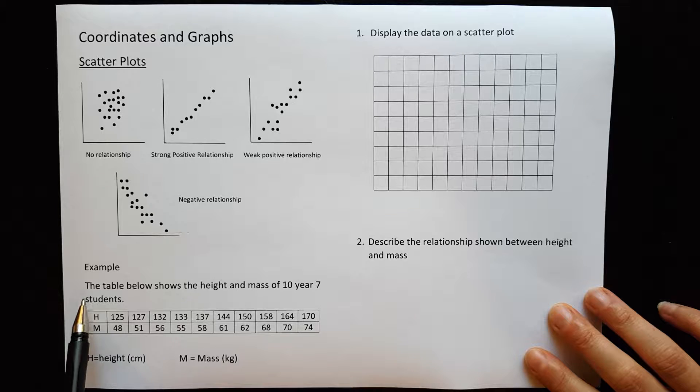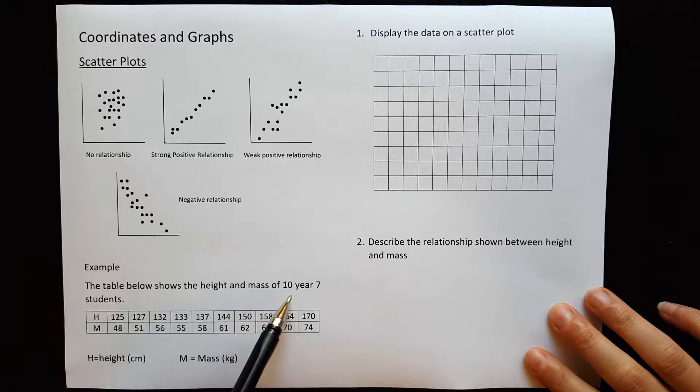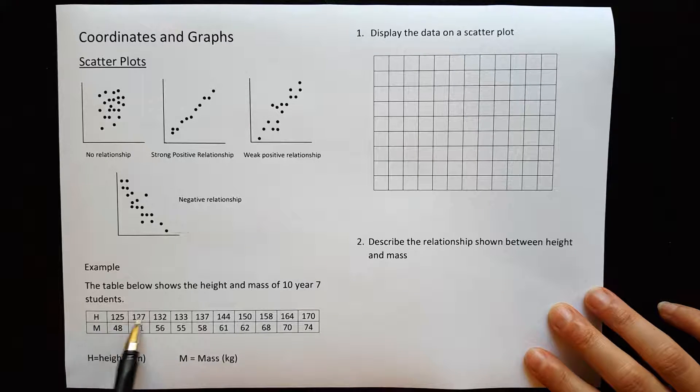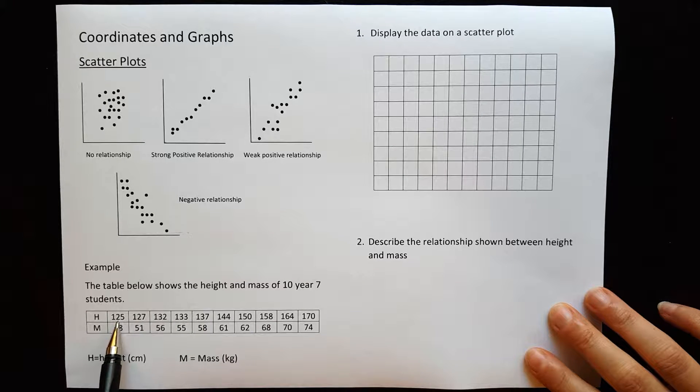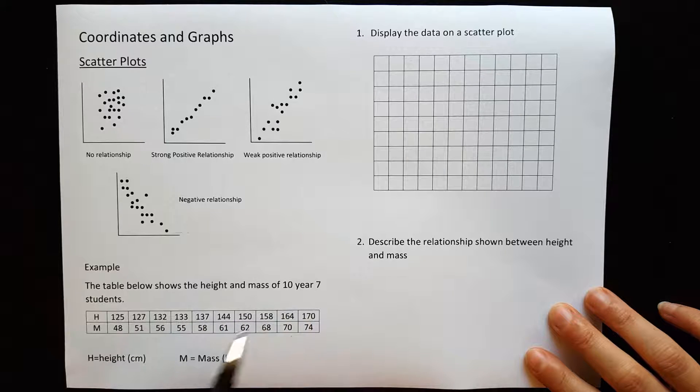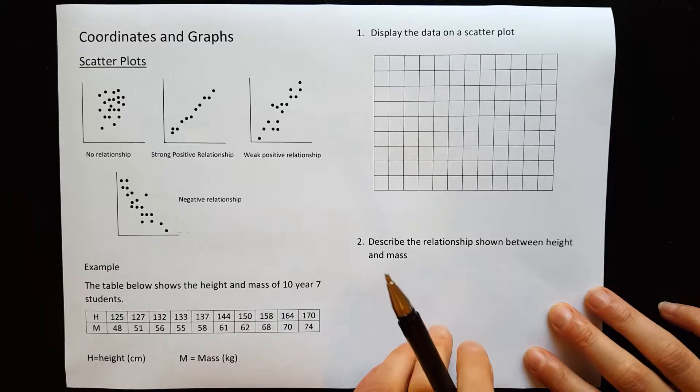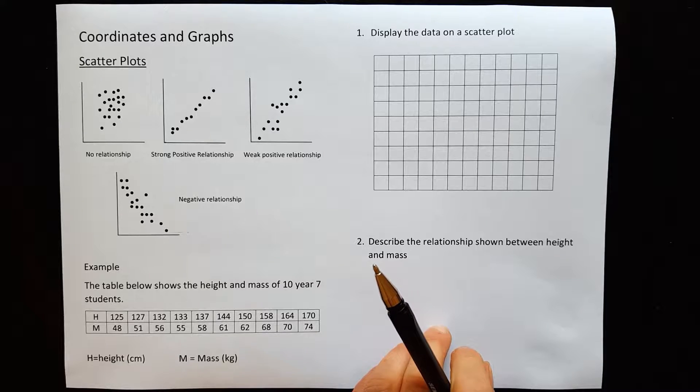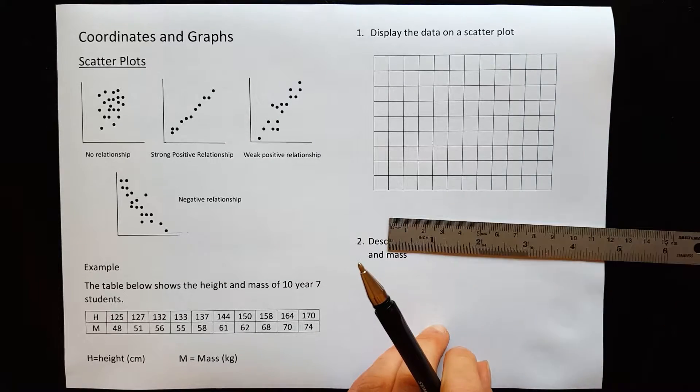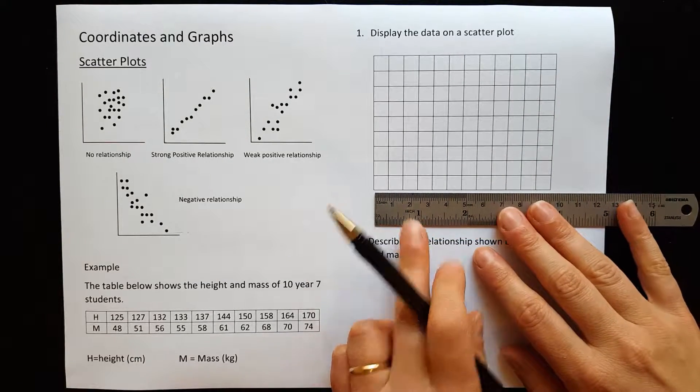So here is a table that shows the height and mass of 10 year 7 students. H represents the height in centimeters, M is the mass in kilograms. All right, here are our results. The smallest height is 125 centimeters, the tallest height is 170 centimeters. That's going to be the variable that goes on our horizontal axis down here.